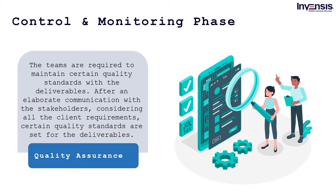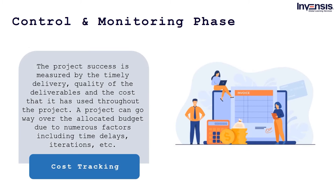In the control and monitoring phase, quality assurance requires teams to maintain certain quality standards with deliverables. After communication with stakeholders and considering all client requirements, quality standards are set, and teams make sure these standards are met with each deliverable. For cost tracking, the project's success is measured by timely delivery, quality of deliverables, and the cost used throughout. A project can go over the allocated budget due to factors including time delays and iterations, so cost is tracked to ensure it does not exceed the specified budget.